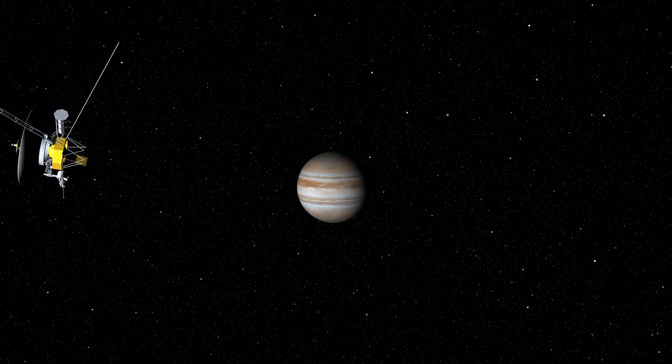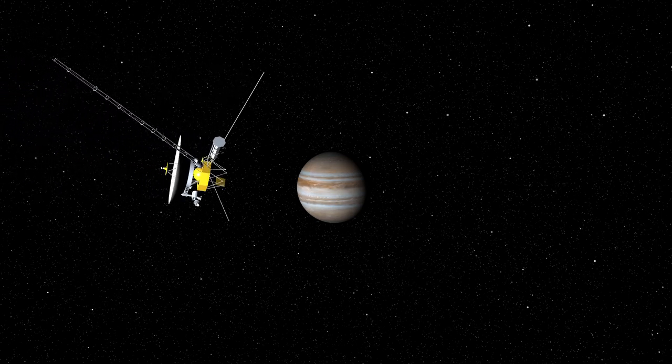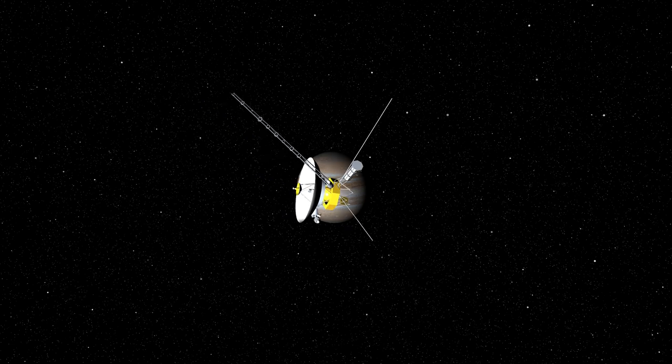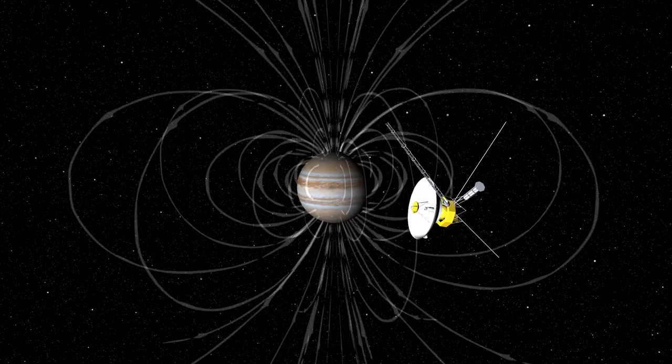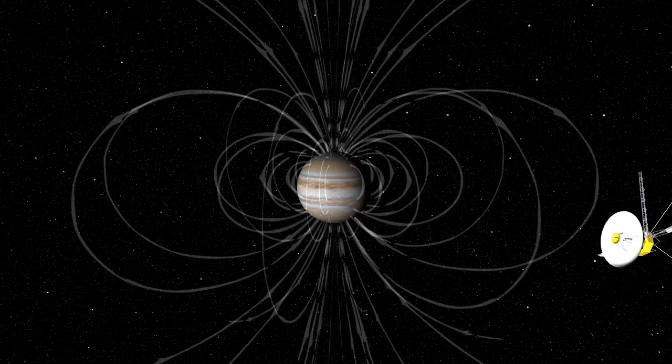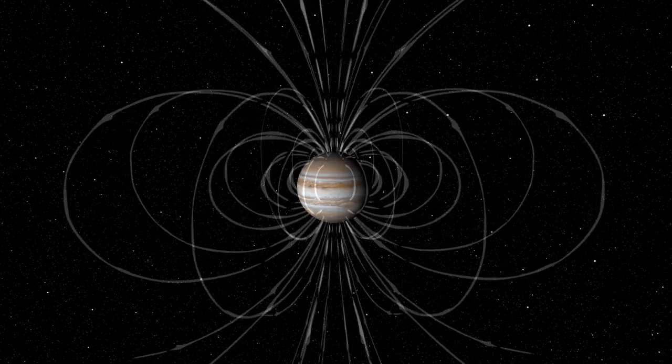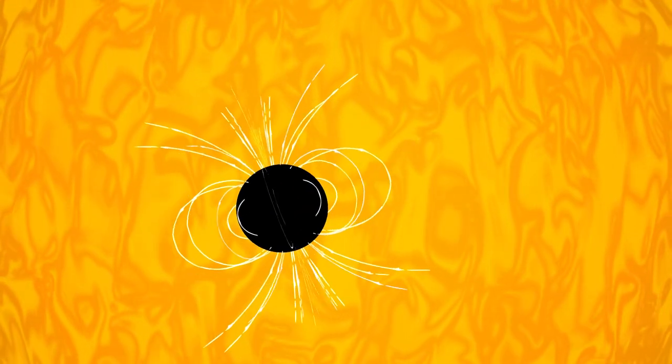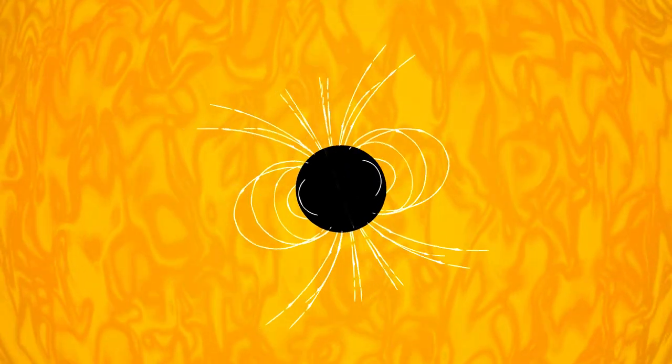Whenever we send a spacecraft to a new planet, one of the first things we look for is a magnetic field. The presence of a magnetic field is an indication that the planet has a liquid core. A planet with a liquid core is one that is active and potentially has a dynamic surface. The presence of a magnetic field is also an indication that its surface may be less affected by space weathering.